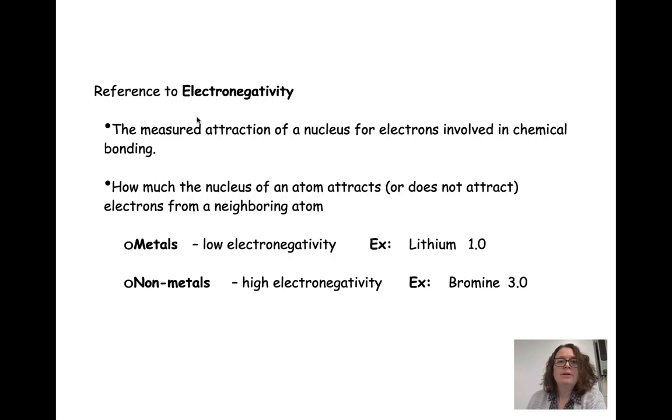And they do this based on their individual electronegativity. We talked a lot about this in the periodic table unit. Electronegativity measures the attraction of a nucleus for electrons involved in chemical bonding. How much the nucleus of an atom attracts or does not attract electrons in the neighboring atom is going to be dependent on electronegativity.